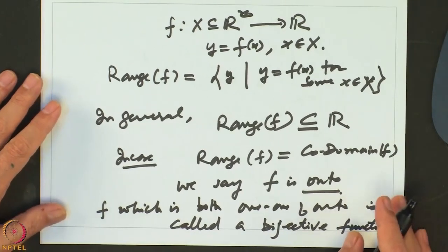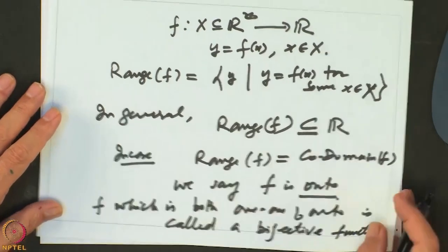A function F which is both 1-1 and onto is called a bijective function.